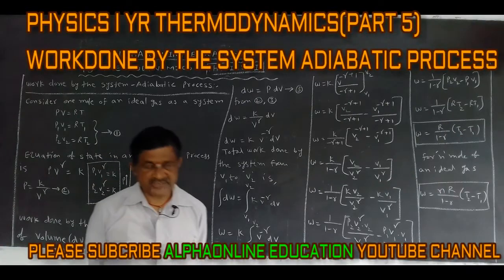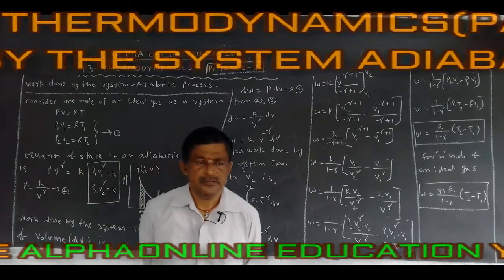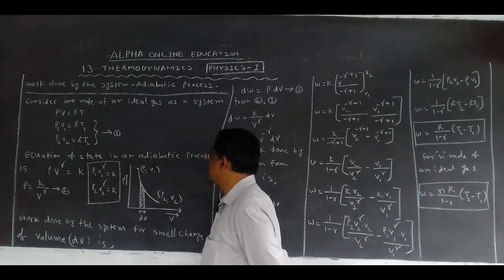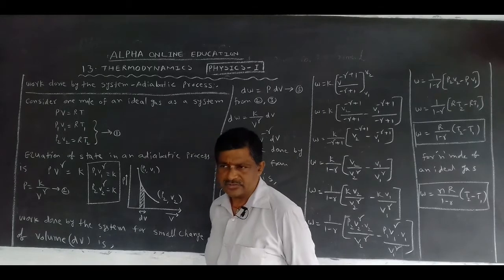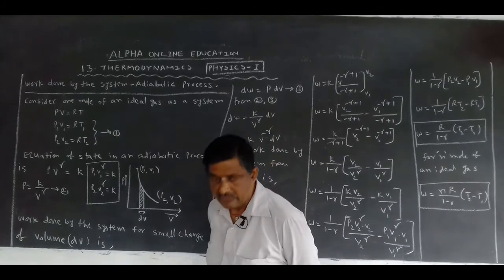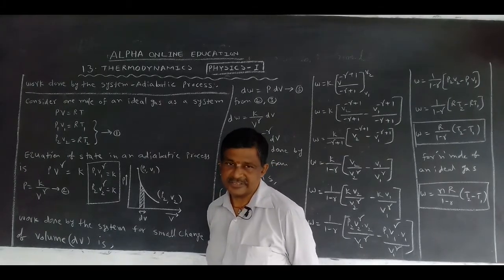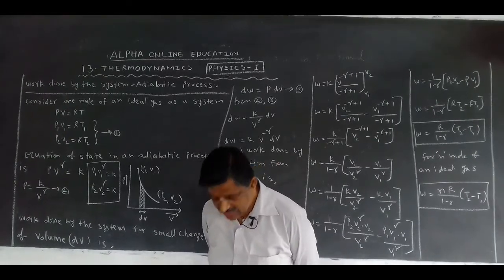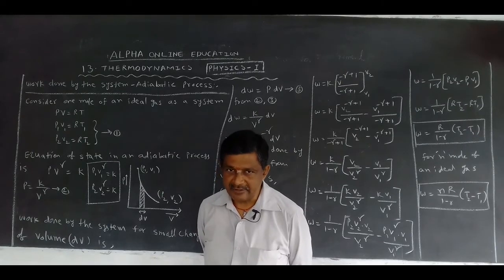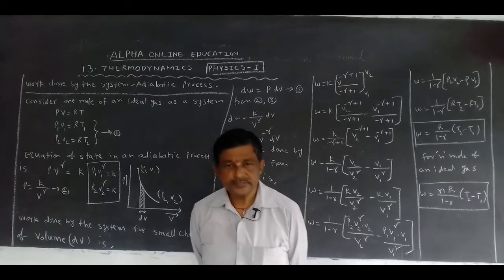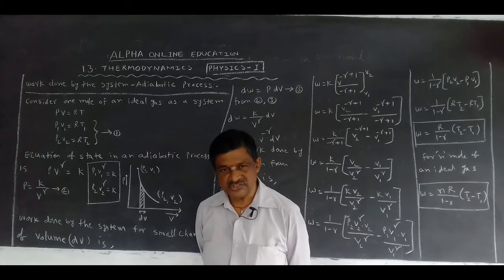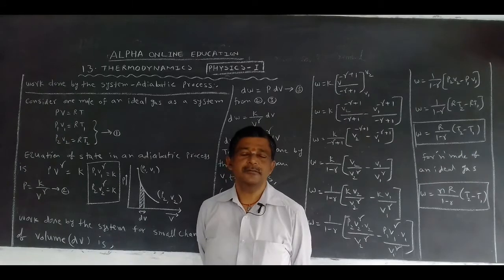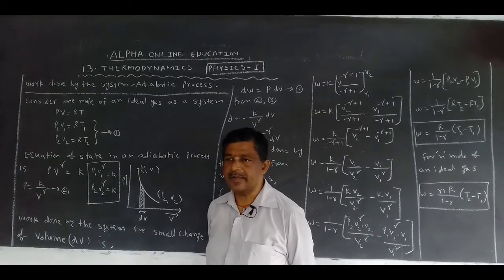In this class, we want to discuss work done by the system in adiabatic process. This is a very lengthy derivation in this chapter. Now, let us see how I derive that. Work done by the system in adiabatic process.